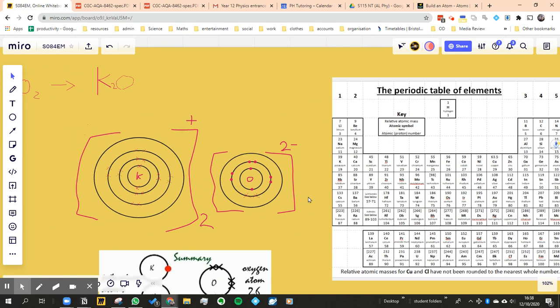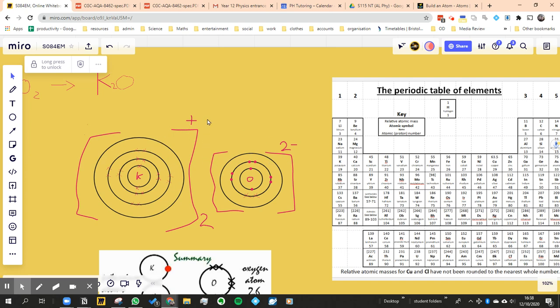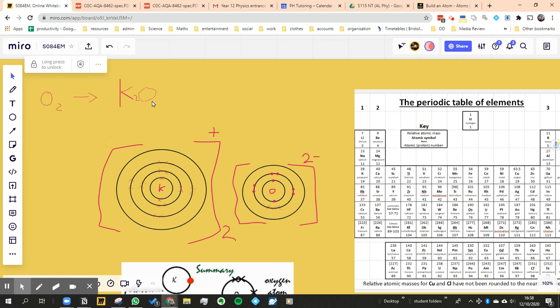So we've got plus one, then two minus. What we do is we get two lots of potassium to equal out the charges, and the formula ends up being K2O.